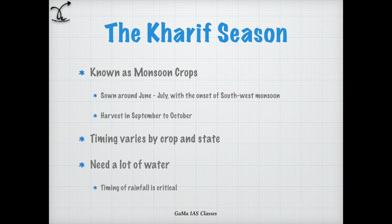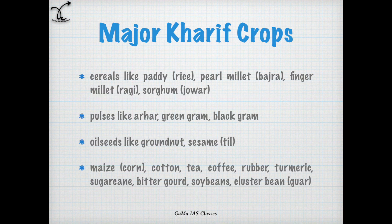The crops of Kharif season are also known as monsoon crops. They are sown around June-July with the onset of southwest monsoon and harvested in September to October. The timing for sowing and reaping varies by crop and state. They need a lot of water and hence timing of rainfall is very critical.